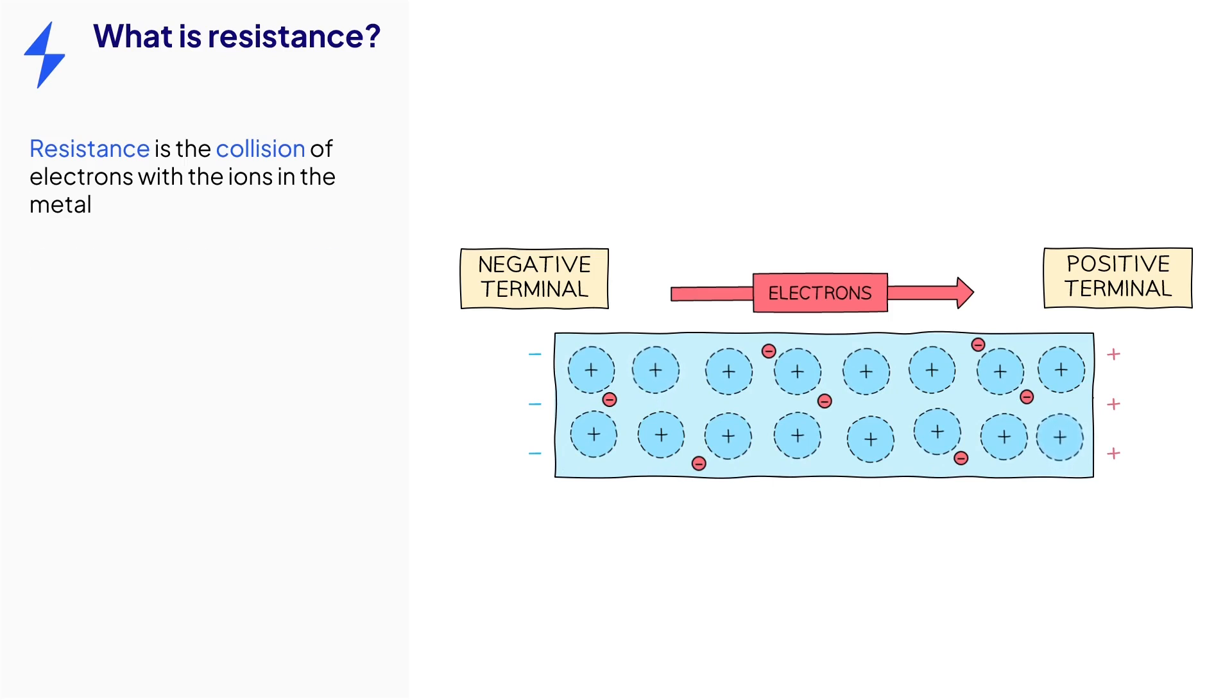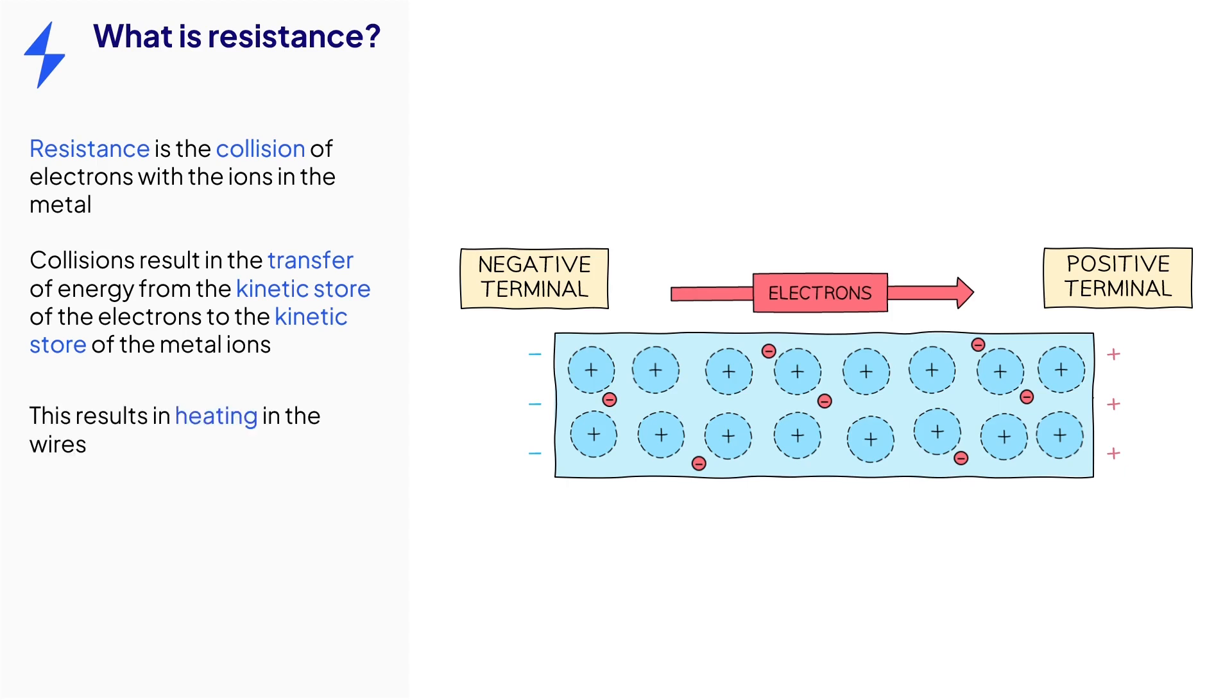Each collision transfers energy from the kinetic store of the electron to the kinetic store of the metal ions. This results in heating in the wire, which is an unuseful energy transfer.